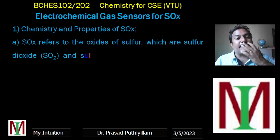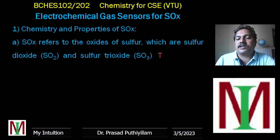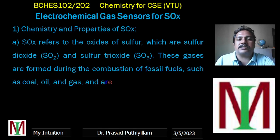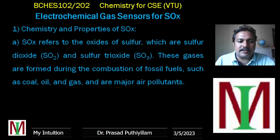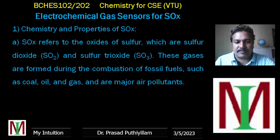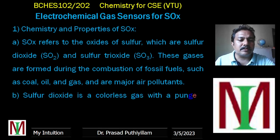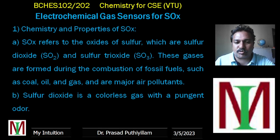Chemistry and properties of SOX: SOX refers to the oxides of sulfur, which are sulfur dioxide (SO2) and sulfur trioxide (SO3). These gases are formed during the combustion of fossil fuels such as coal, oil, and gas, and are major air pollutants. Sulfur dioxide (SO2) is a colorless gas with a pungent odor.